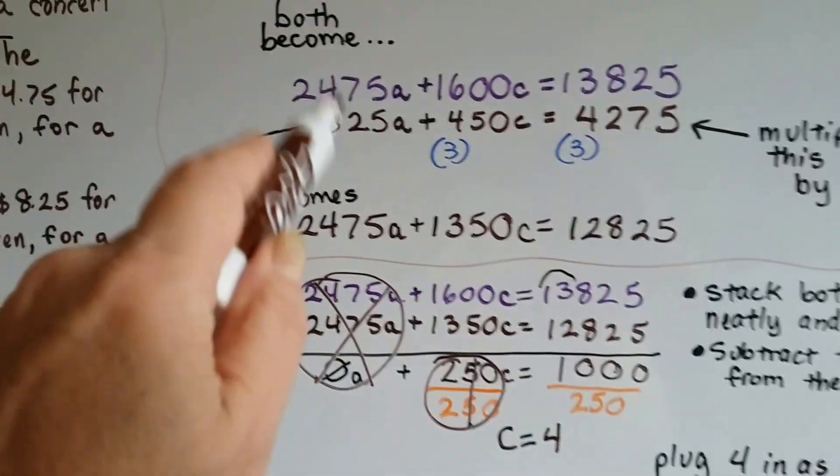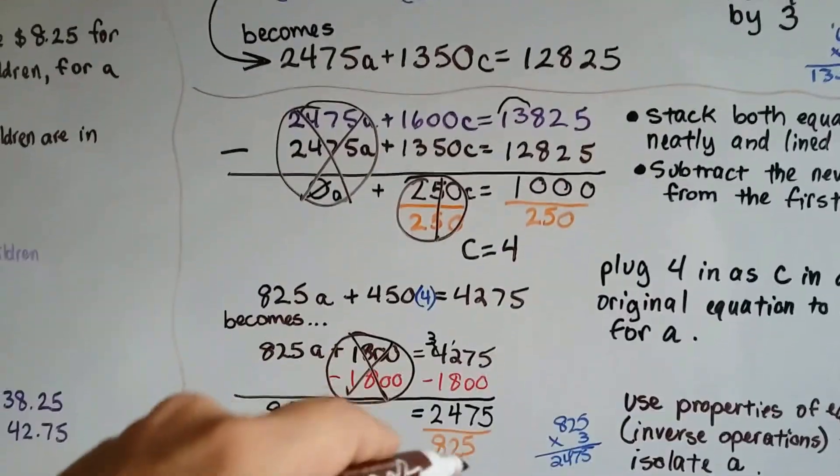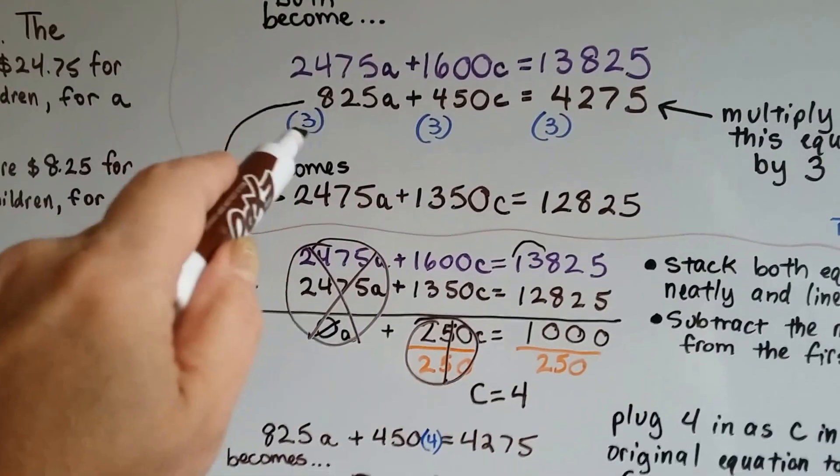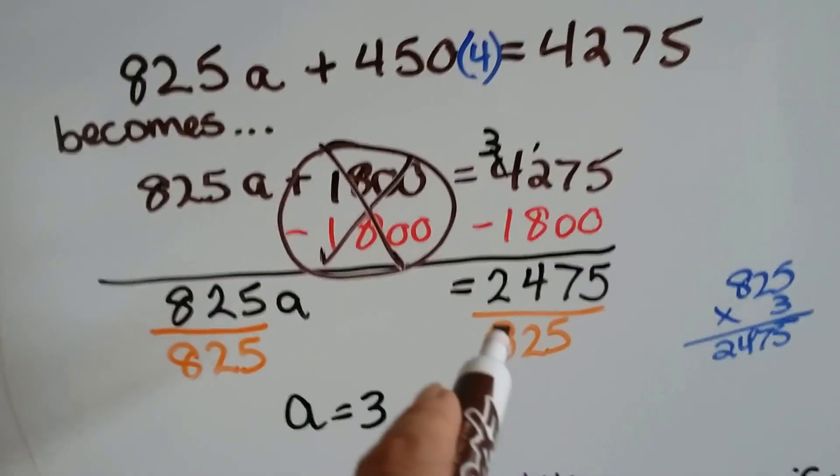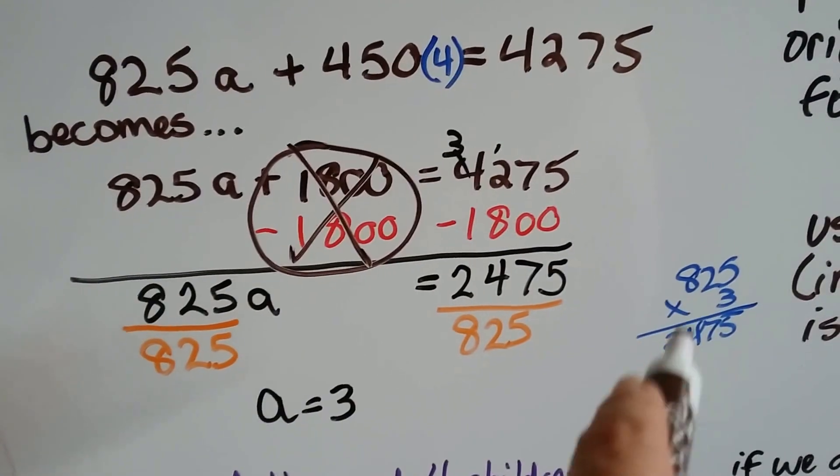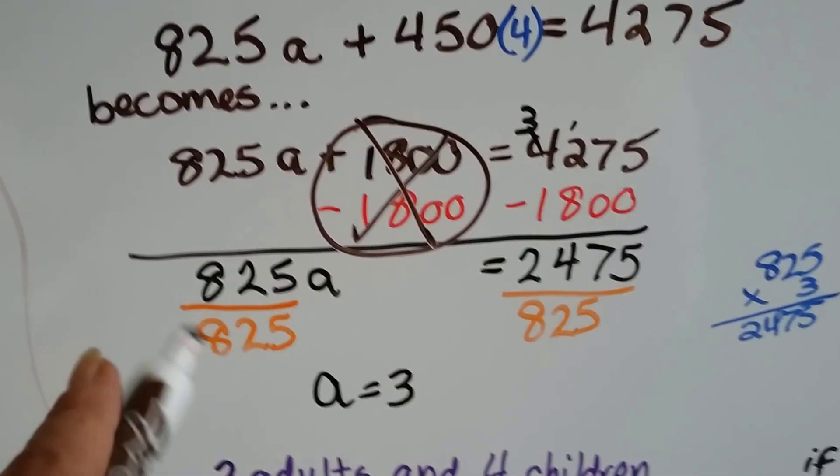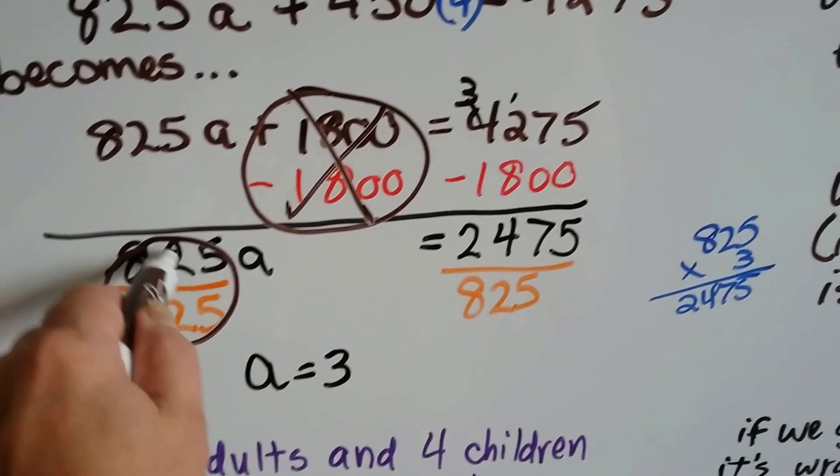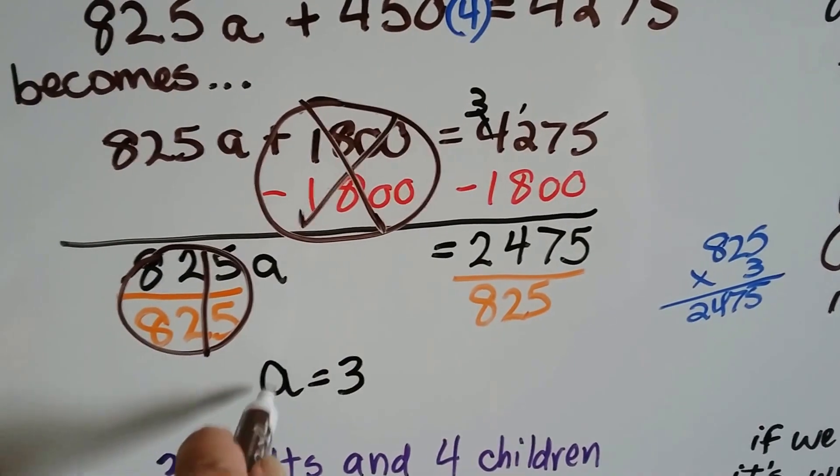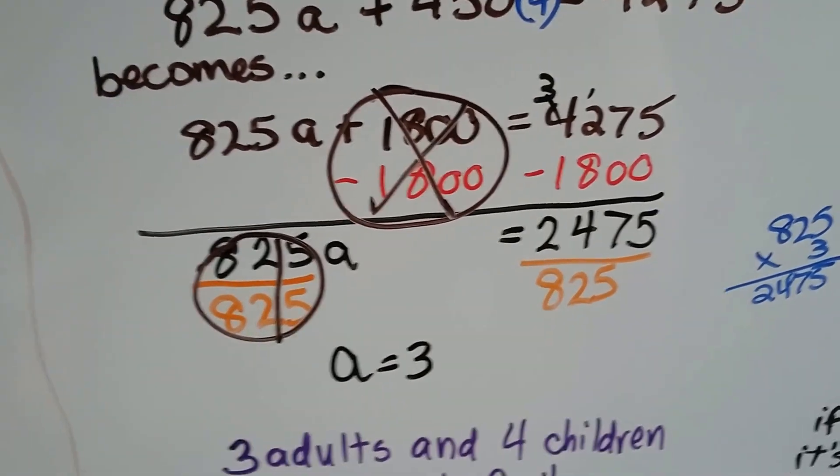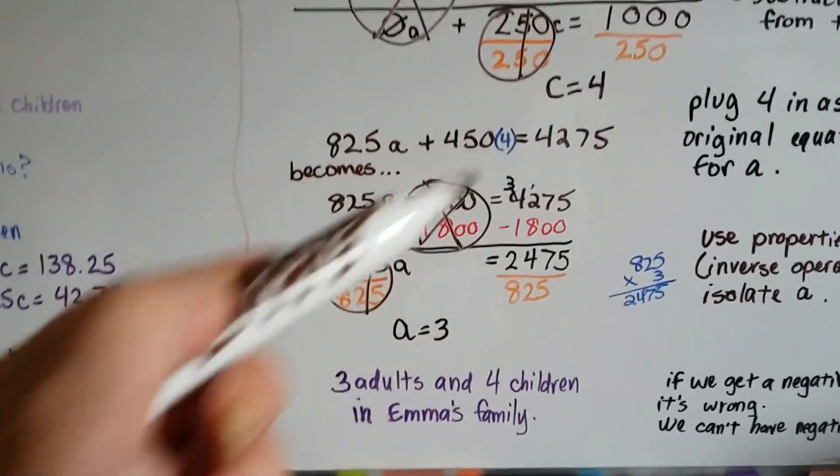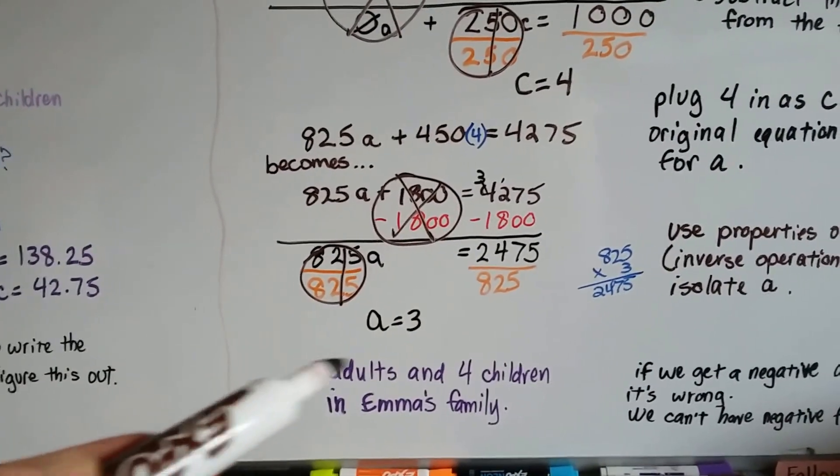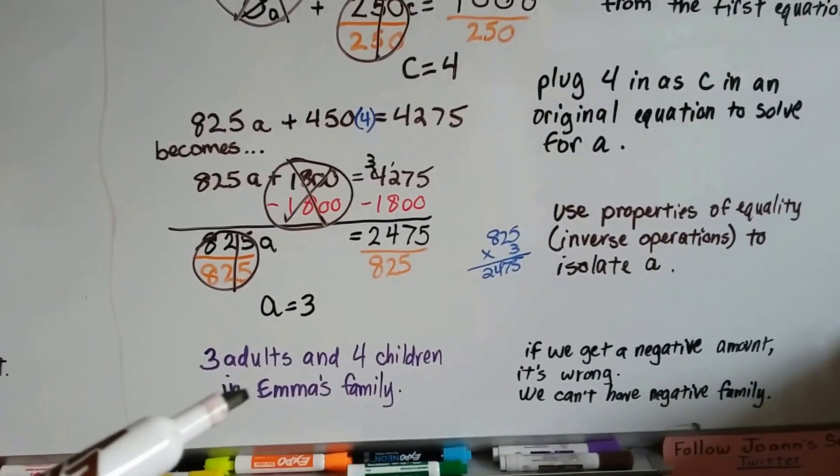Remember, we knew that 2,475 was just 825 times 3. So we can use that information, or do a little multiplication on the side, to see that this creates our friend the invisible 1, and that is going to make A equal 3. So we know that C is 4 and A is 3, so there's 3 adults and 4 children in Emma's family.